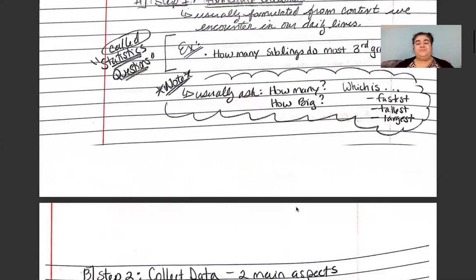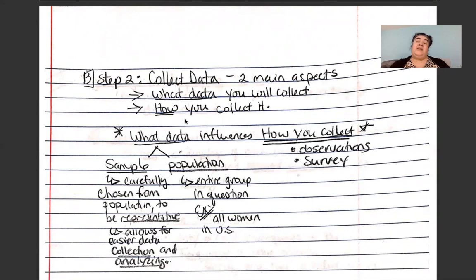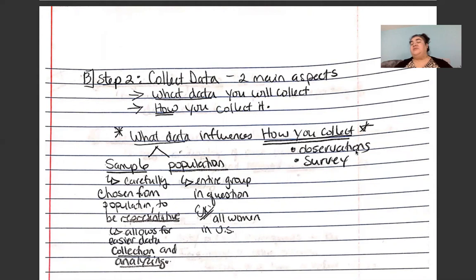Step two is collecting the data. There are two main aspects to consider: what data you need to collect and how you're going to collect it, because they influence each other. What data you collect influences how you collect it, and how you collect it influences the kind of data you get — they go hand in hand. Basic collection methods include observations, surveys, and measurements. We normally collect data from what's called a population — in statistics, this refers to the entire group you're hoping to get information from.